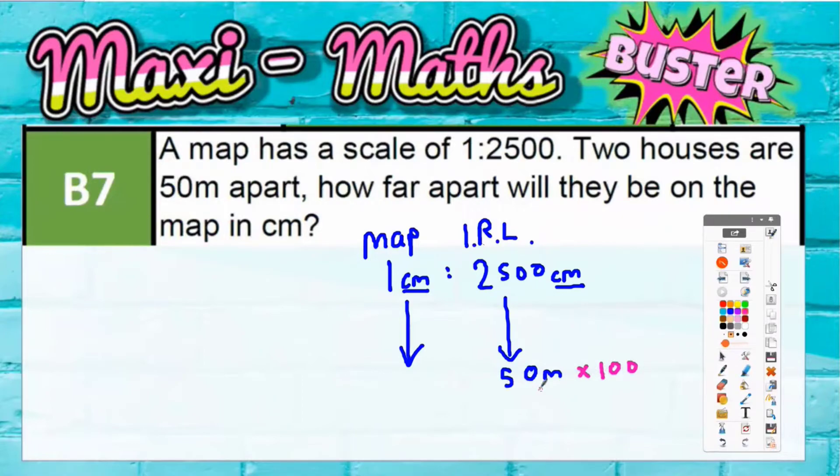So 50 meters is 50 lots of a hundred. And 50 lots of 100—well, five times one is five and then there would be one, two, three zeros to put on. So 50 lots of hundred is 5,000 centimeters.